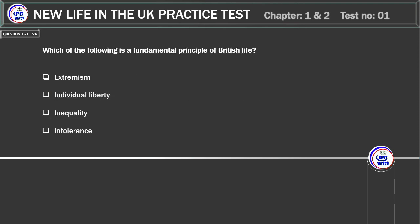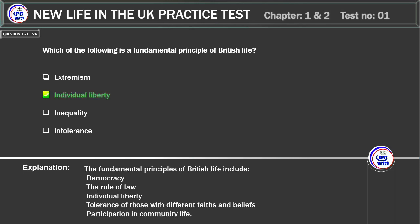Which of the following is a fundamental principle of British life? Extremism. Individual liberty. Inequality. Intolerance. Correct answer: individual liberty. Explanation: the fundamental principles of British life include democracy, the rule of law, individual liberty, tolerance of those with different faiths and beliefs, and participation in community life.